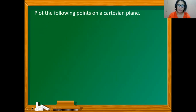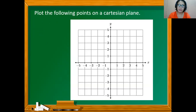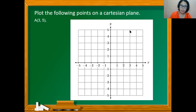We're going to plot the following points on the Cartesian plane. Point A is at (3, 5). The first coordinate is 3, which is the abscissa, and 5 is the ordinate. Starting from the origin, we count 3 units to the right since the x-coordinate is positive: 1, 2, 3. Then we count 5 units up since the y-coordinate is positive 5: 1, 2, 3, 4, 5. This is now where point A is.